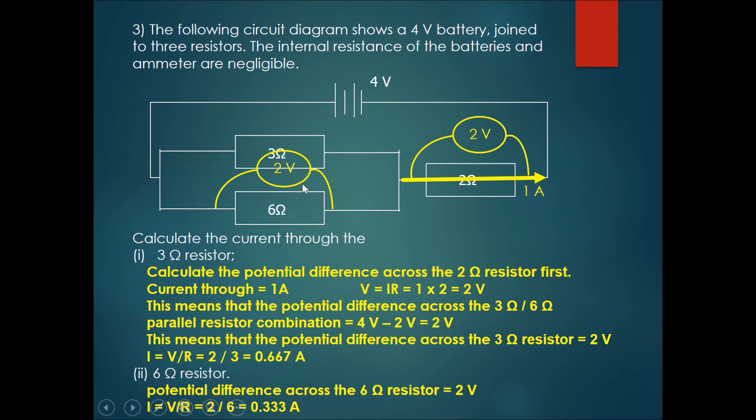So now we have the potential difference and the resistor. So we have I, the current going through is equals to V over R, which is 2 over 6, which will end up with 0.333 amperes.